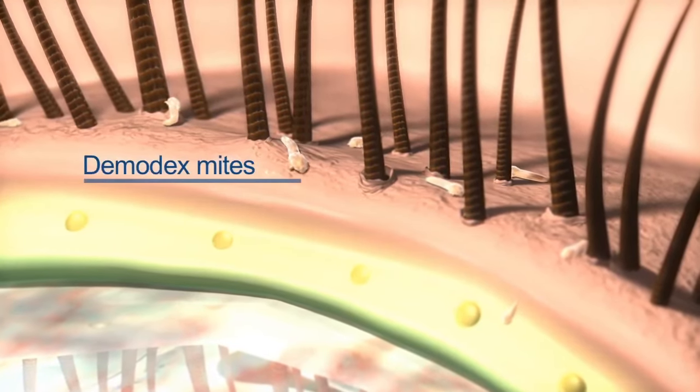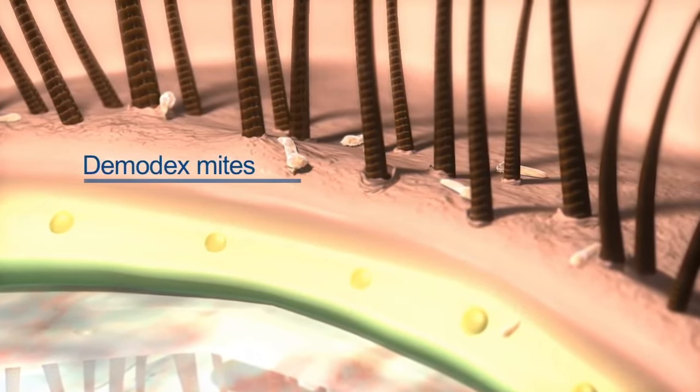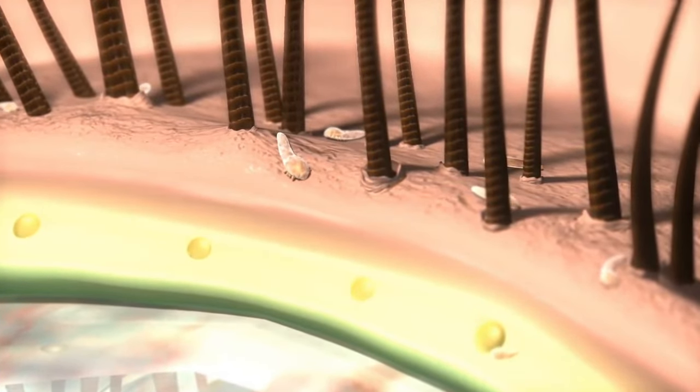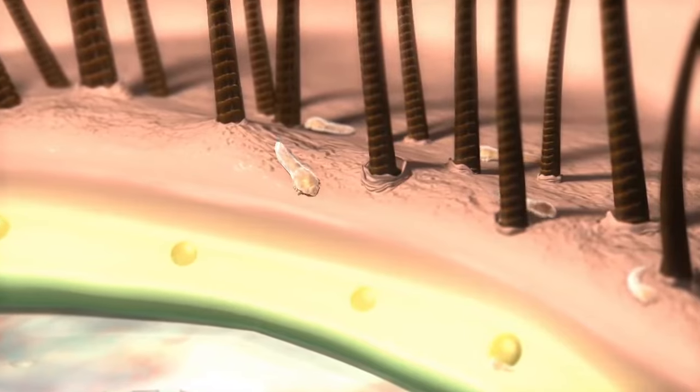Demodex mites are the most common ectoparasites found on humans. While they are highly prevalent in low numbers, an infestation of mites can lead to blepharitis and meibomian gland disease.